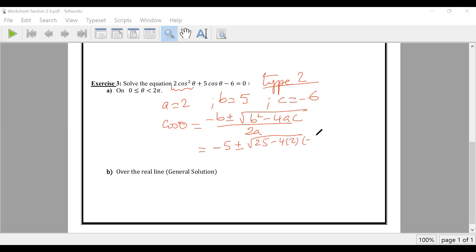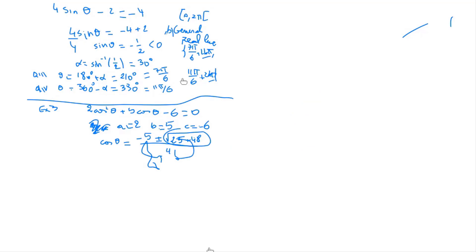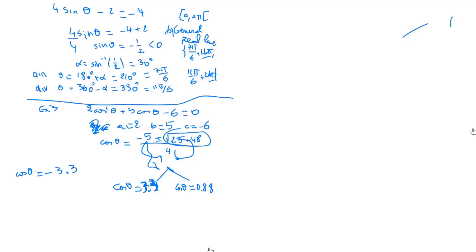Calculating: minus 4 times 2 times negative 6, over 2 times 2. This gives two values. The first value is cosine theta equals approximately minus 3.3 — how many solutions does this give? Cosine must be between negative one and one, so minus 3.3 is not valid. This is no solution.